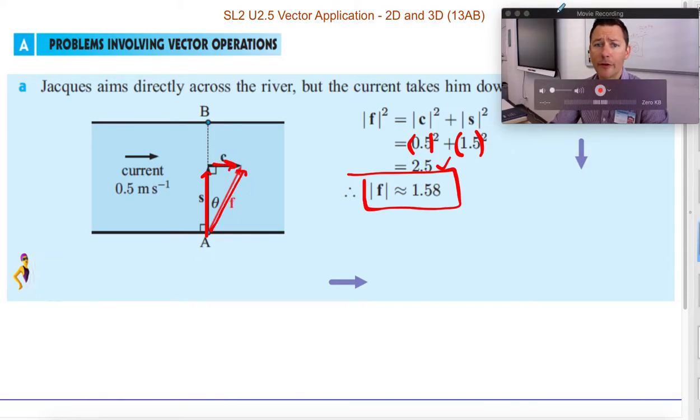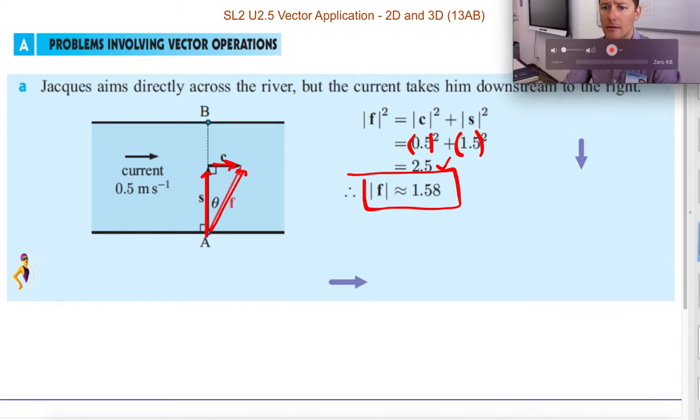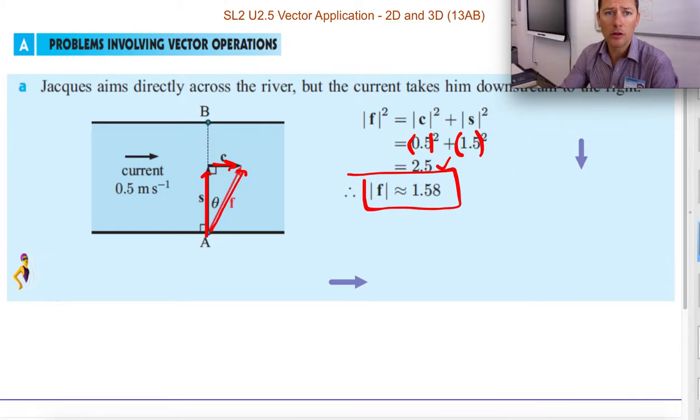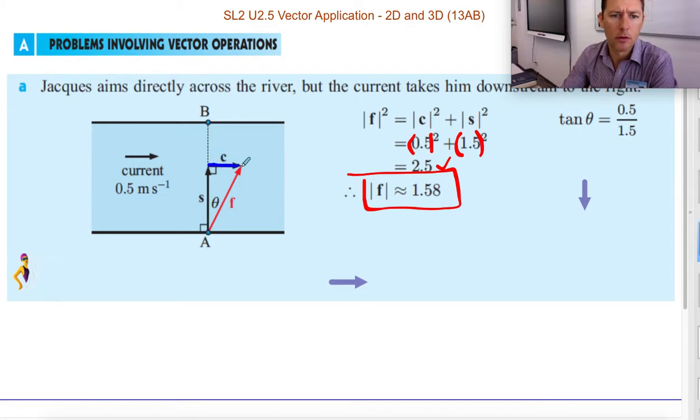If we want to find the angle from the intended path, we want to find that angle theta, we can just use tangent. And tangent, all tangent is, is the opposite over the adjacent.